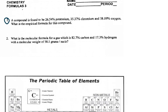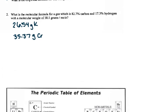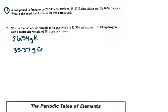Because they're out of percents, we know percents are out of 100, so it's easiest just to think about this on a 100-gram basis. We know that if we had 100 grams, we'd have 26 grams of potassium, 35 grams of chromium, and 38 grams of oxygen. So I'm going to write down my givens: 26.54 grams of potassium, 35.37 grams of chromium, and 38.09 grams of oxygen.